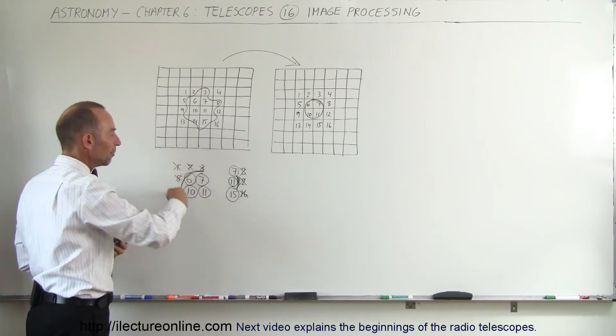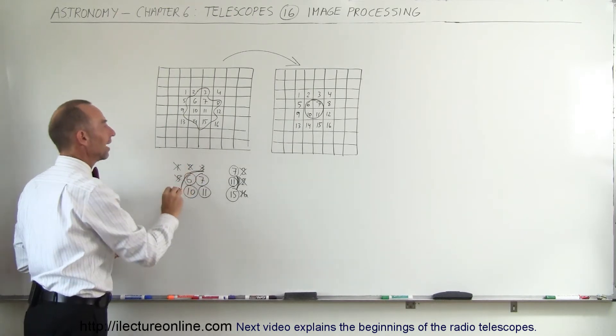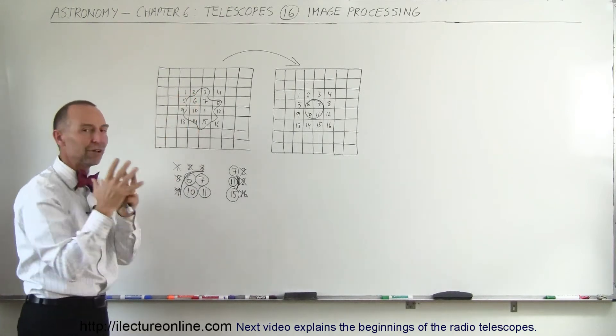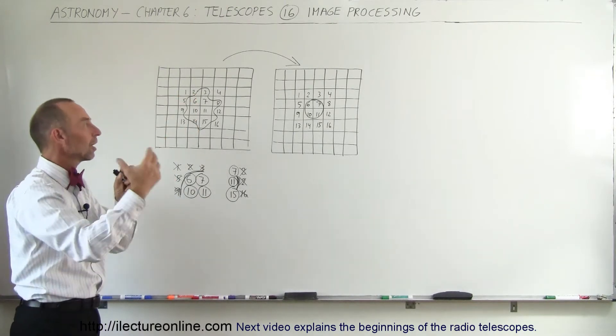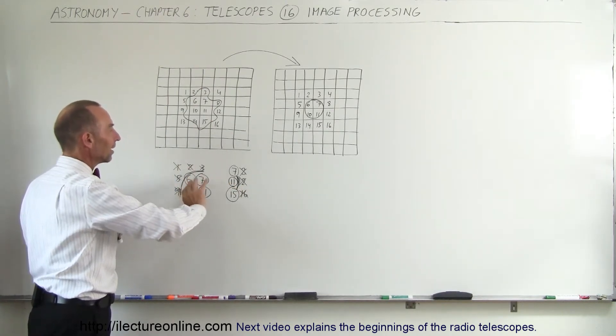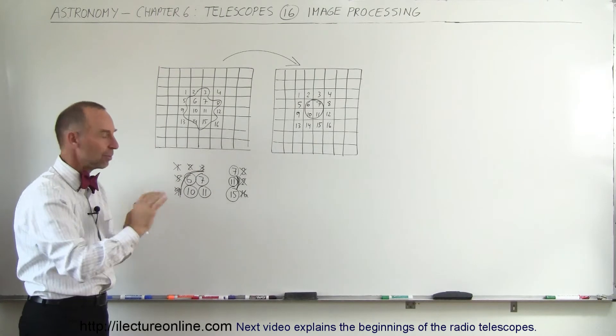We integrate all this information into pixel number 6 and determine it has enough information, enough light energy, enough photons collected to warrant that it is part of the final image. Also, 7, 10, and 11 are full pixel images.